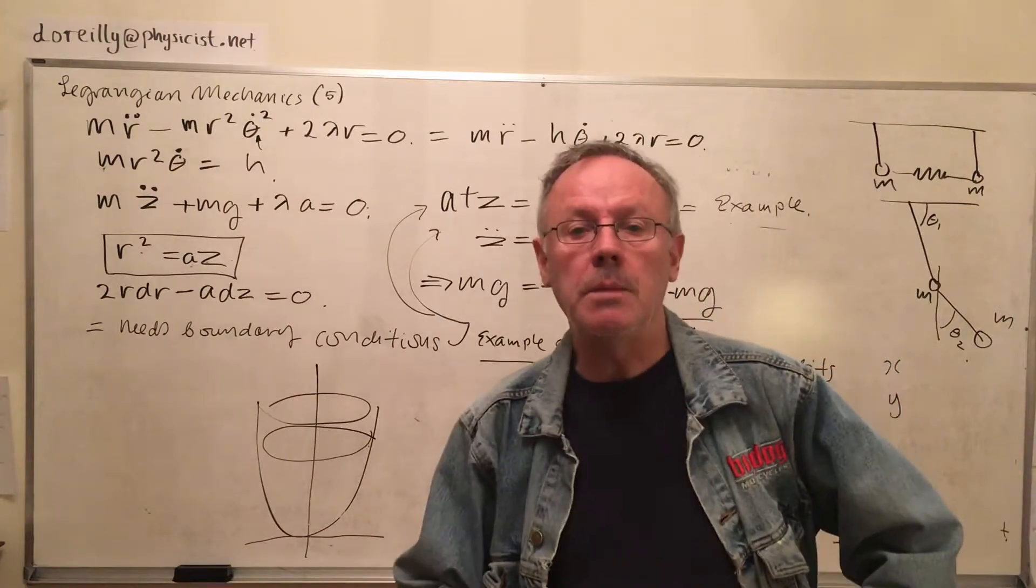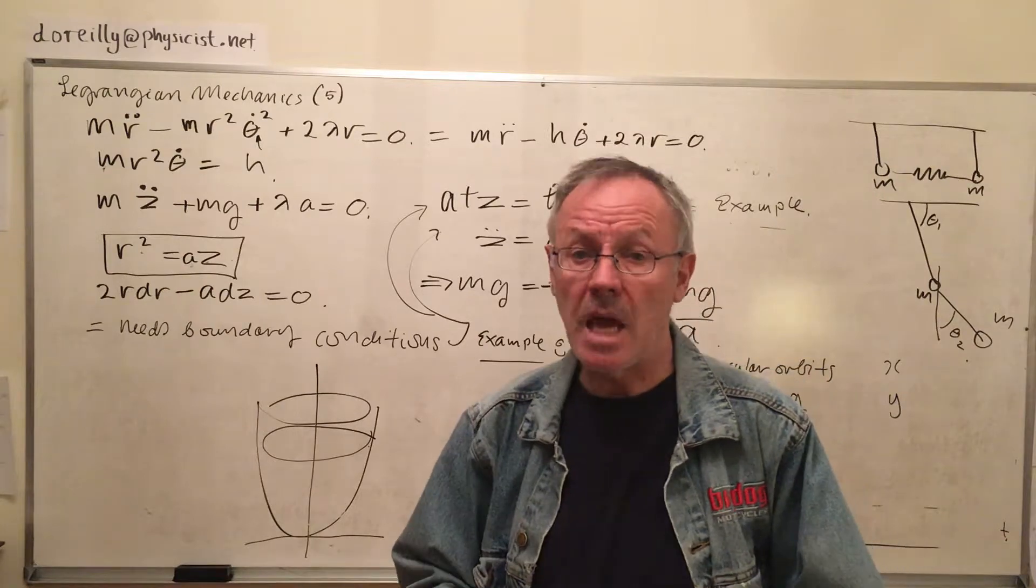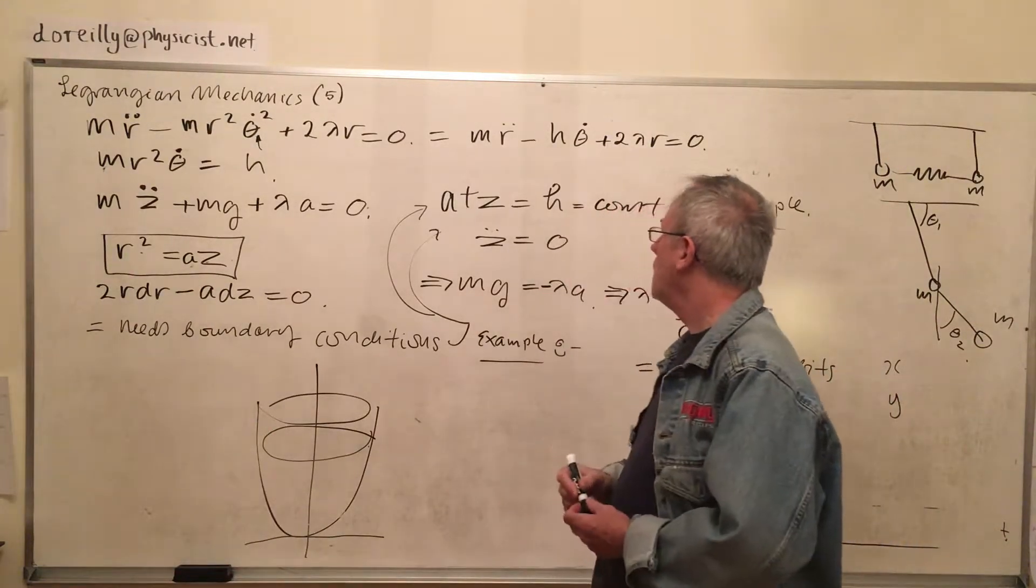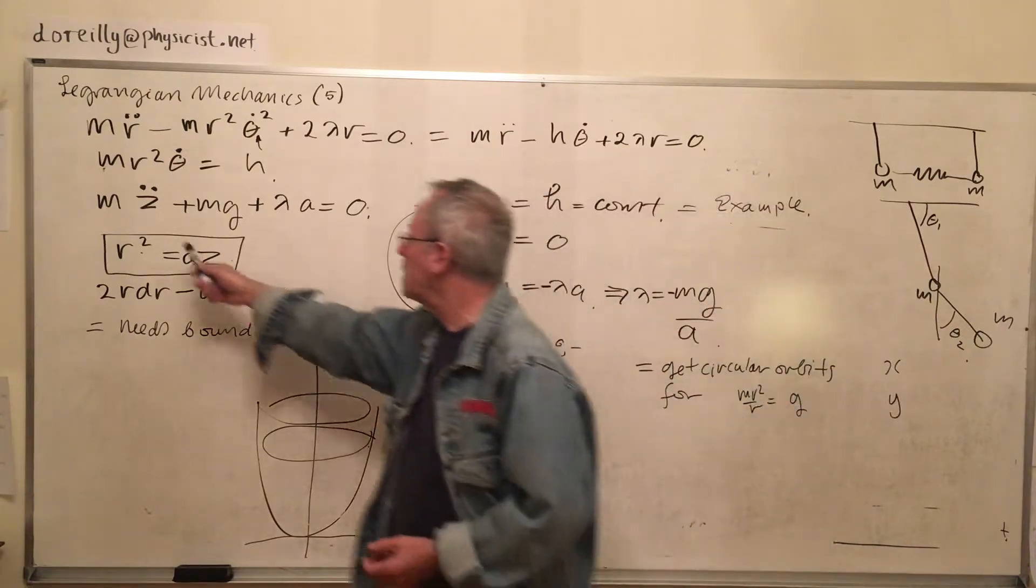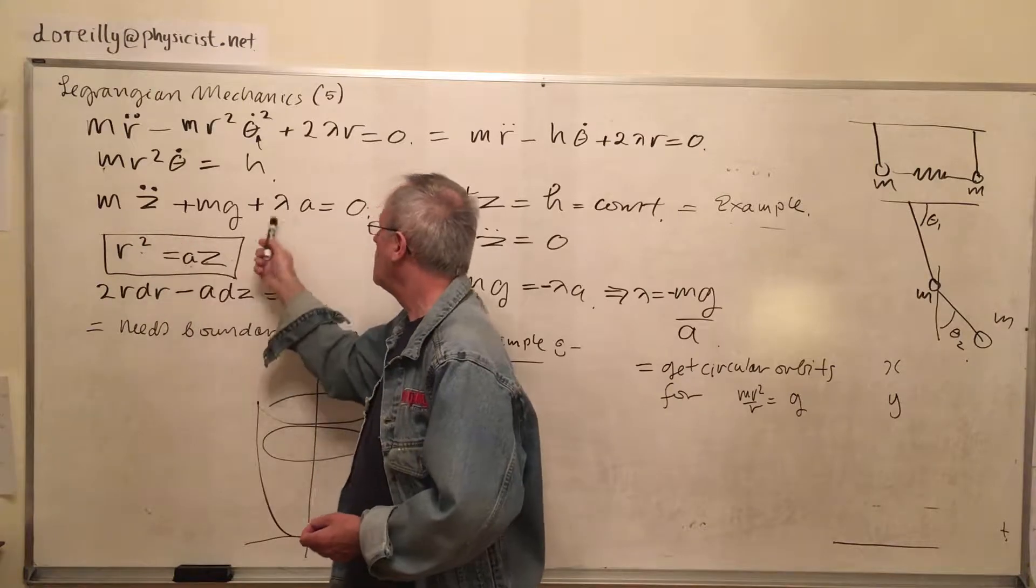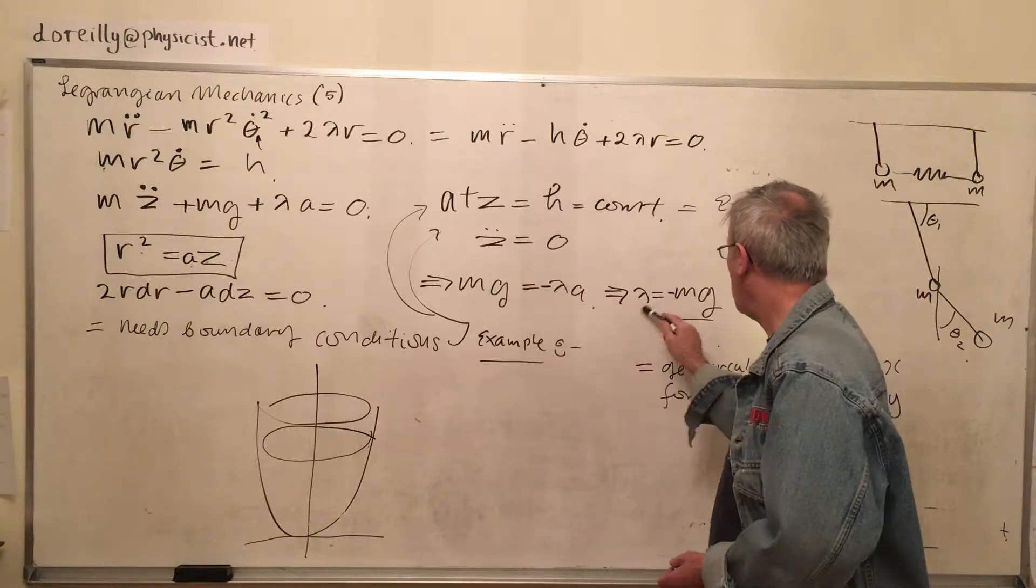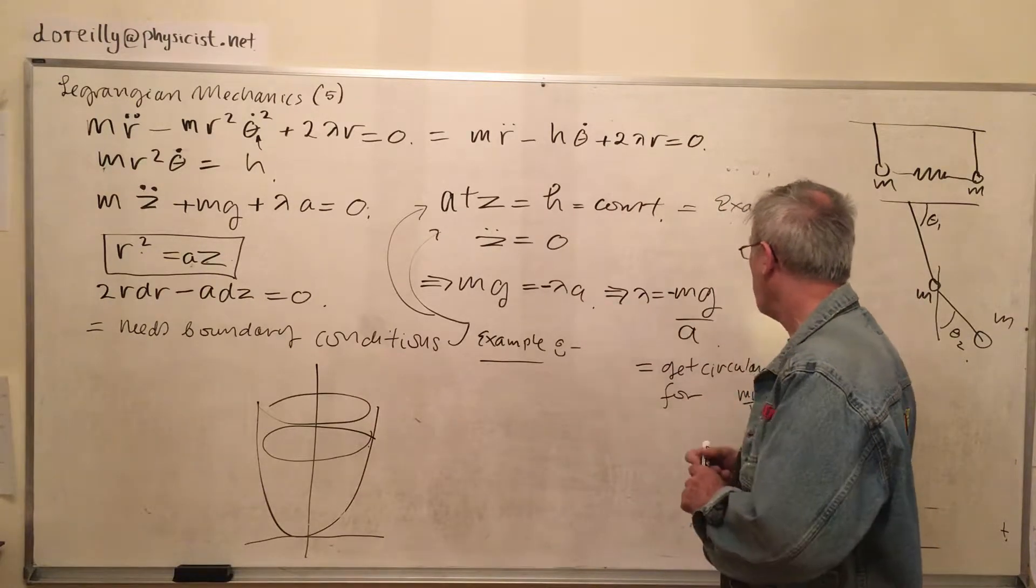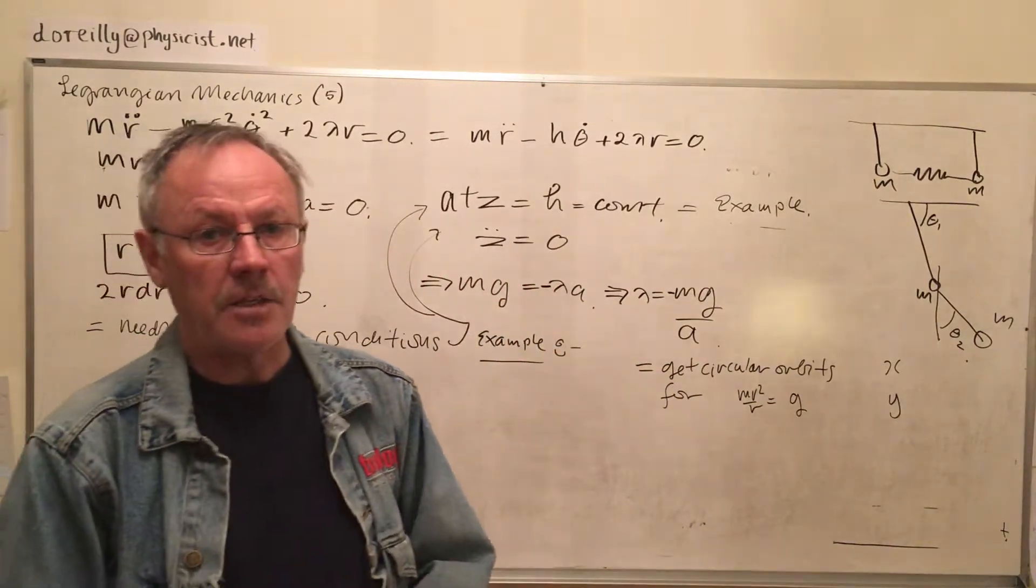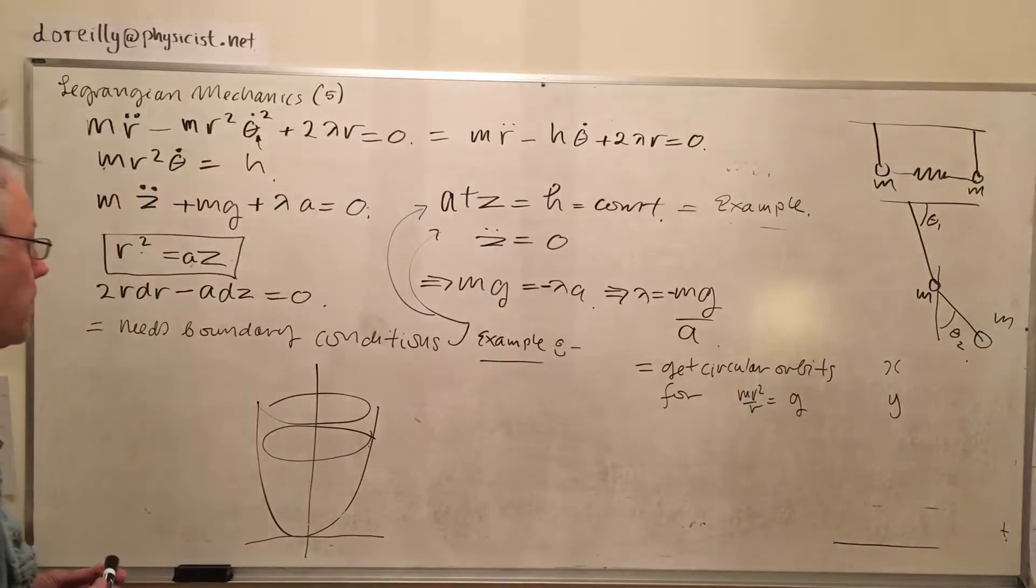Before you can proceed, you need boundary conditions. So I'm stopping the problem right here because I don't know what kind of boundary conditions we can evoke. An example of a boundary condition would be let the particle travel at a height z equals h. In which case, the z by dt is 0, d squared z by dt squared is 0. So we can solve for that lambda. mg is minus lambda times a or lambda is minus mg over a. So, lambda begins to take on some significance. Actually, it's a generalized force. That's really what the lambda is. So that's what we had for that particular problem.